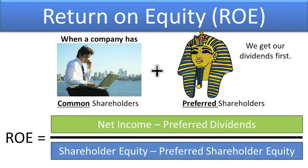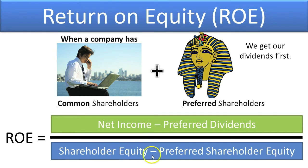Shareholder equity must be reduced by the amount of preferred shareholder equity to arrive at the equity related to common shareholders — shareholder equity minus preferred shareholder equity. You can find a company's preferred dividends and preferred shareholder equity amounts on its statement of shareholder equity.